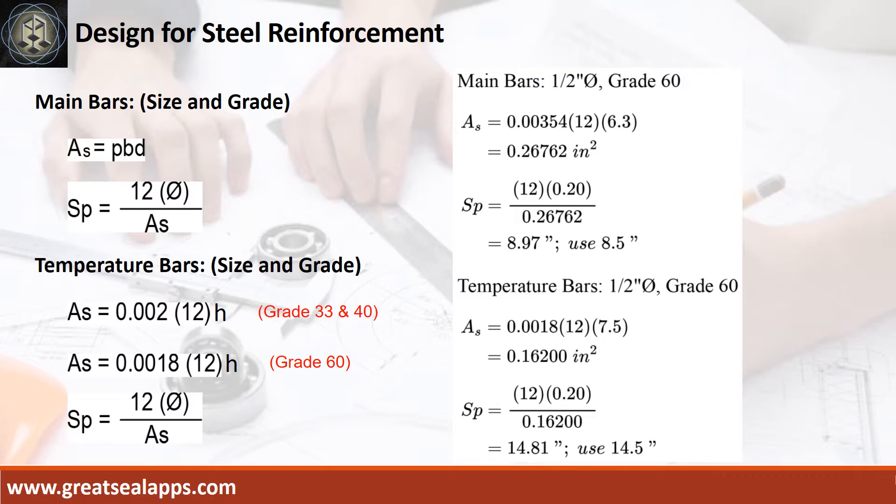The area of steel for temperature bars is 0.162 square inch, and the spacing for ½ inch diameter bar is 14.5 inches.